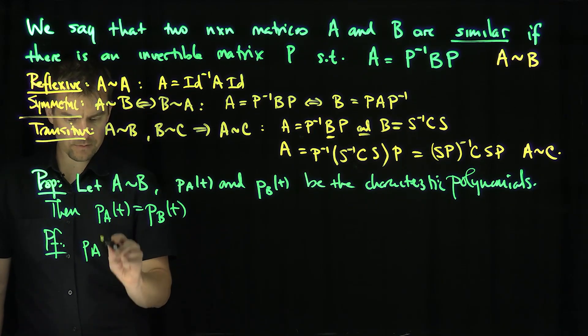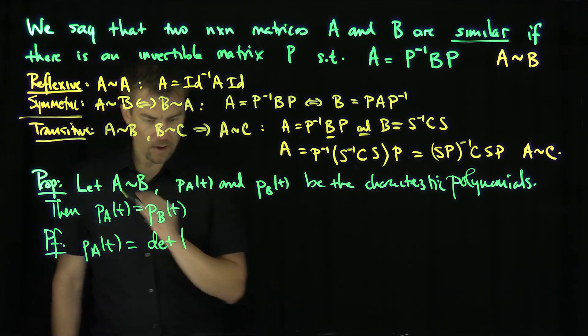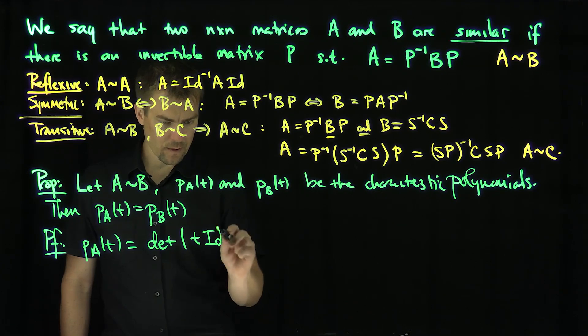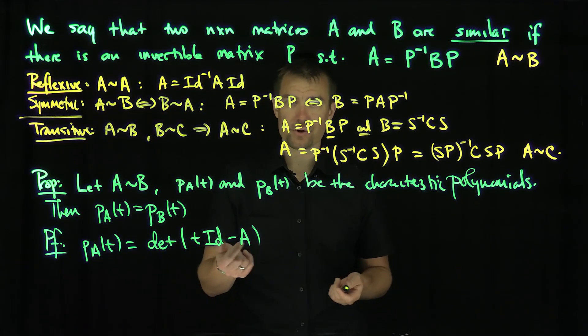It's equal to the determinant of T times the identity minus A. Or you can write it as A minus T times the identity. It doesn't matter.